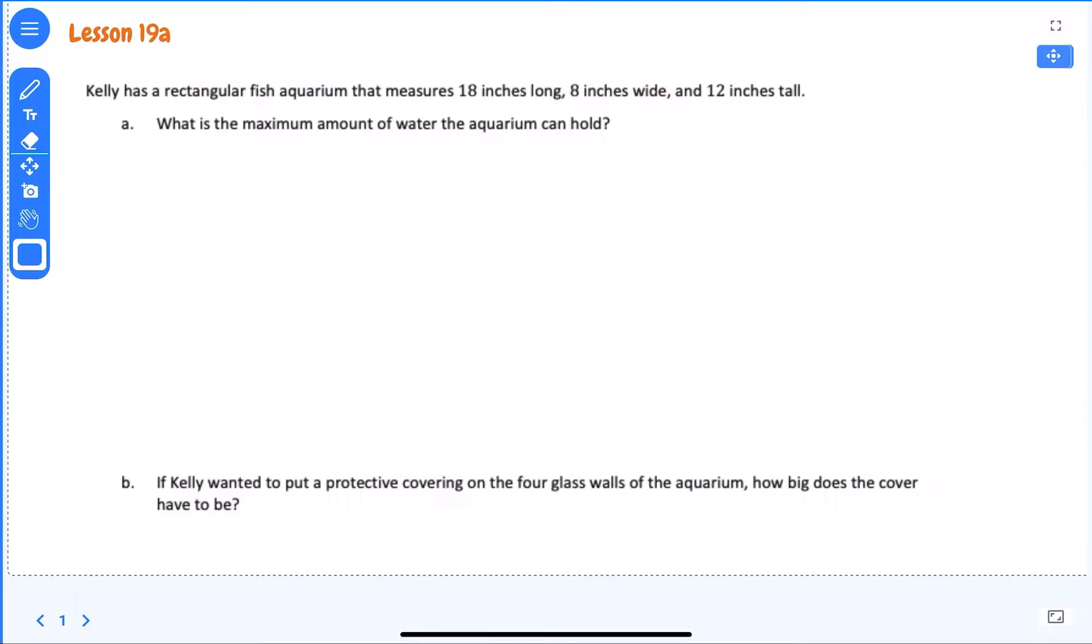8 inches wide and 12 inches tall. What is the maximum amount of water the aquarium can hold? So if it's holding, that means its volume, which is equal to length width and height. Length times width times height.